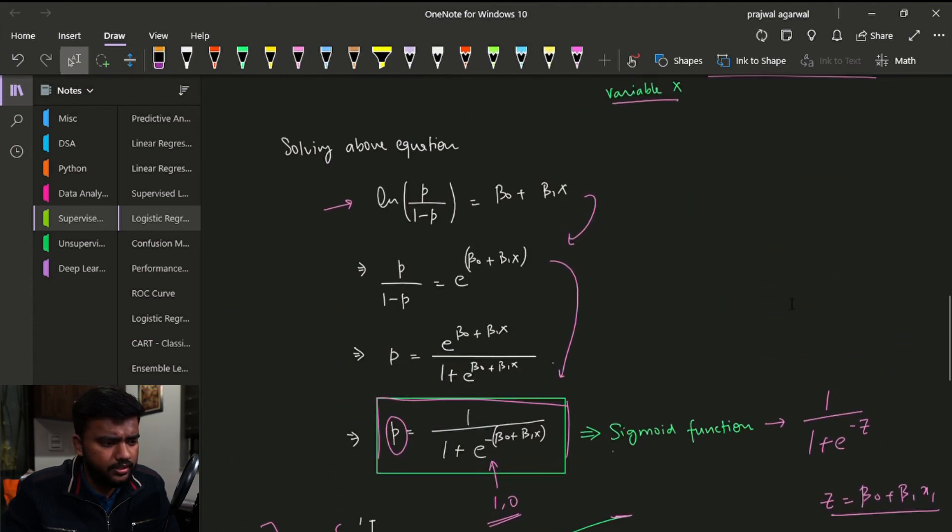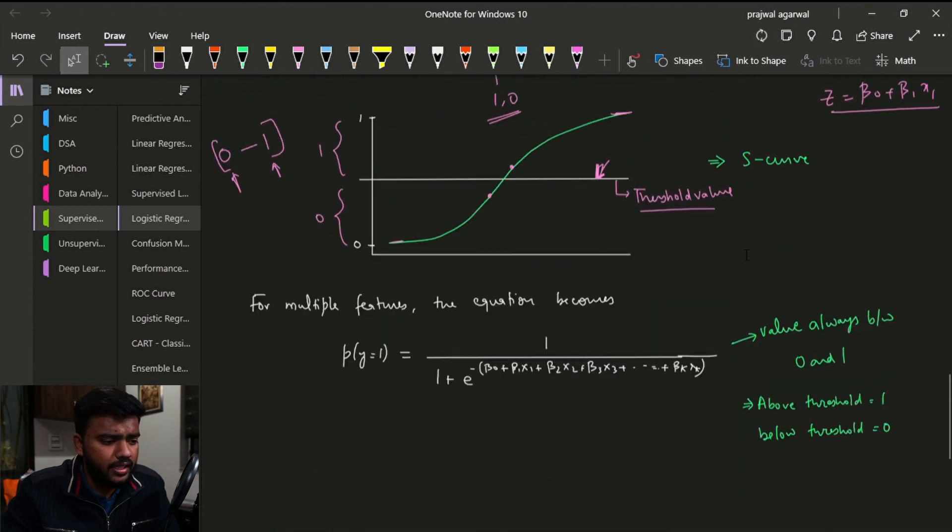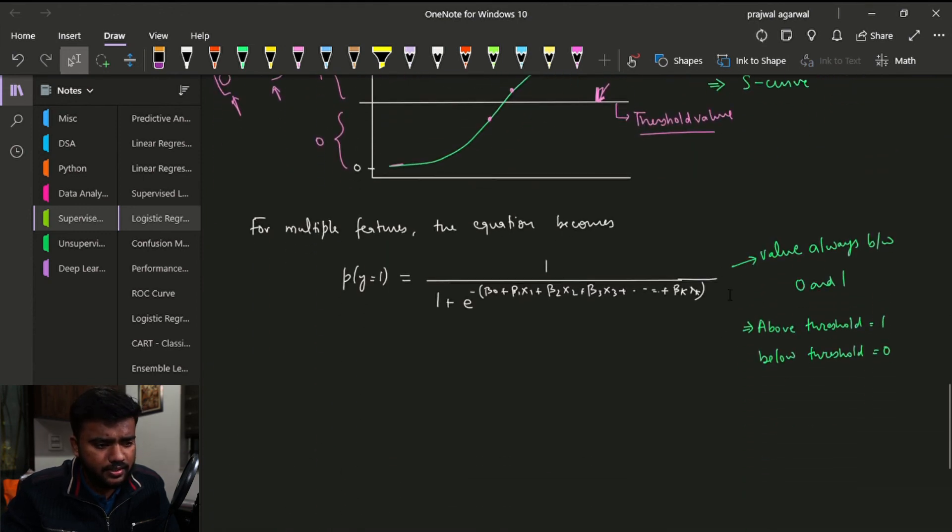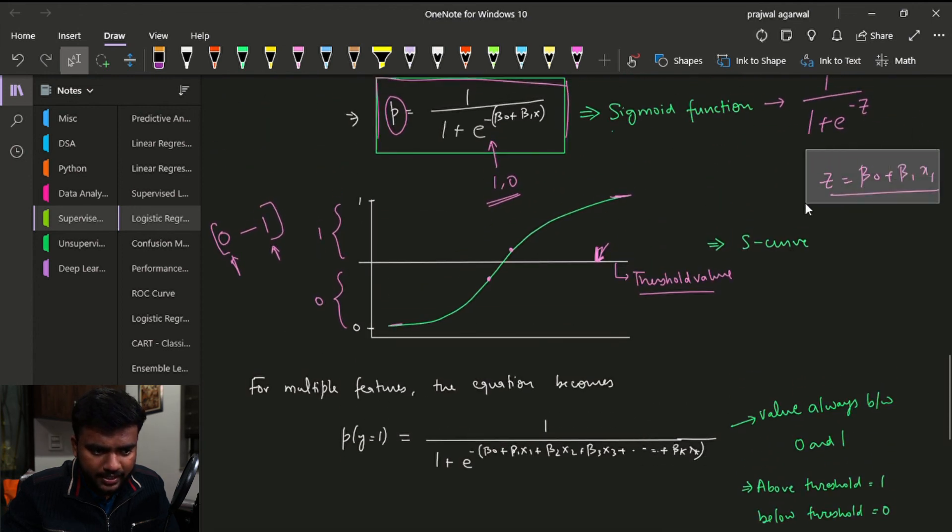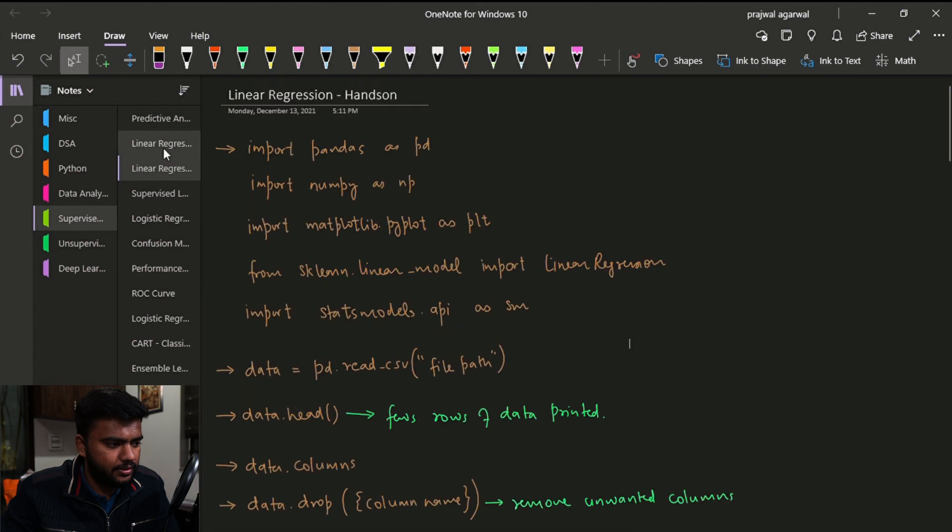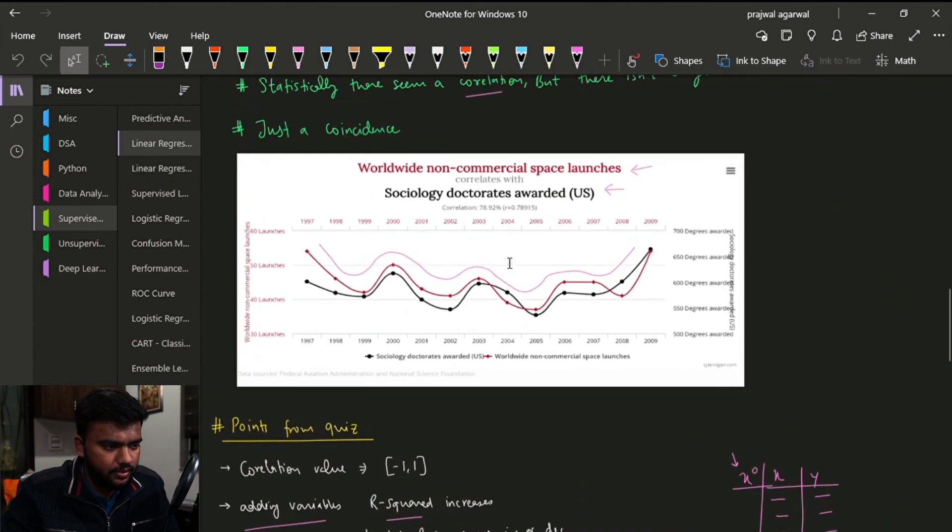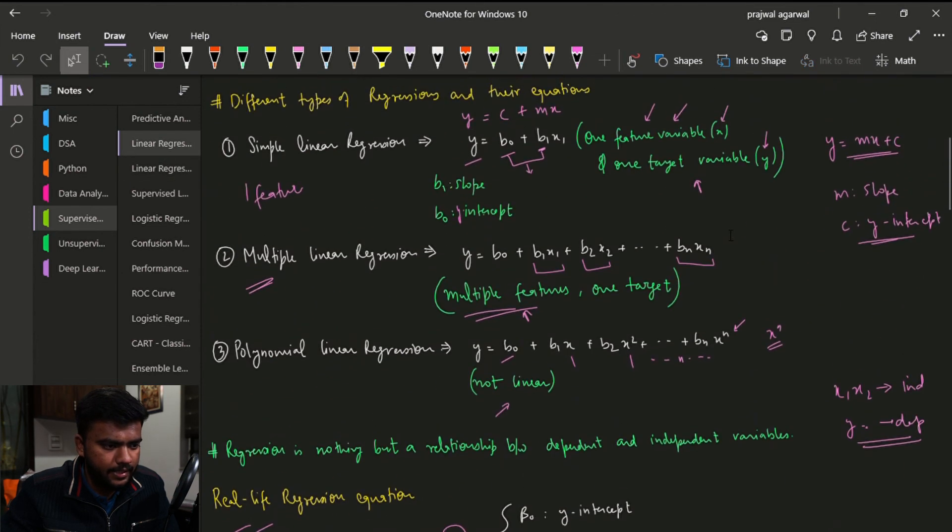And yeah, so till now we discussed about a simple linear regression, right, with one feature. If we have multiple features, we will just, you know, in place of z we will keep this line. We will keep all the expressions.